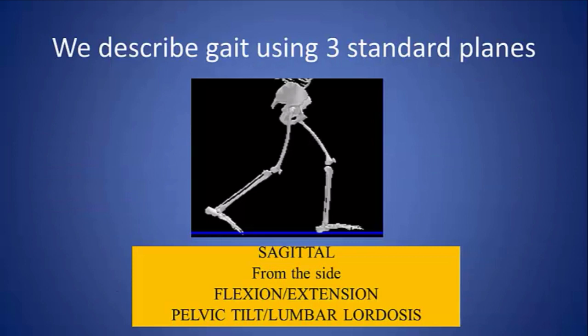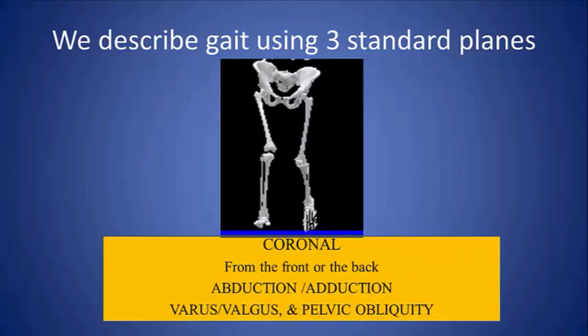We describe gait using three standard planes, the first being the sagittal plane from the side. This shows us flexion and extension at the hips, knees, and foot and ankle, as well as pelvic tilt and lumbar lordosis.